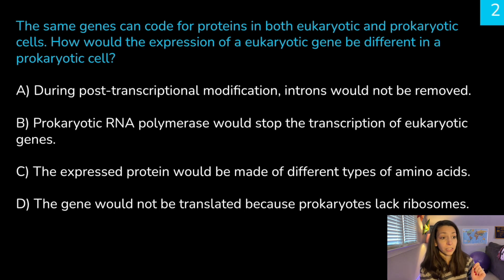Problem two, the same genes can code for proteins in both eukaryotic and prokaryotic cells. How would the expression of a eukaryotic gene be different in a prokaryotic cell? A, during post-transcriptional modification, introns would not be removed. B, prokaryotic RNA polymerase would stop the transcription of eukaryotic genes. C, the expressed protein would be made of different types of amino acids. D, the gene would not be translated because prokaryotes lack ribosomes. Think about it.